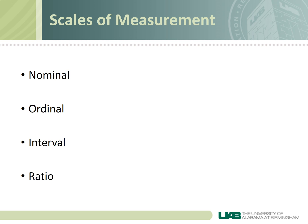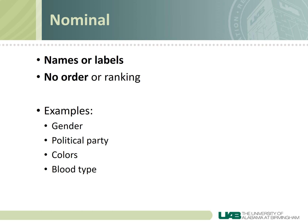Nominal data are just names or labels with no inherent ordering or ranking. For example, gender is traditionally labeled as male and female — there's no inherent ordering there, as one gender isn't better than another, though some might argue otherwise. The same applies to the other variables in this category.